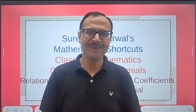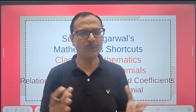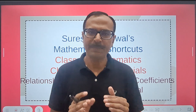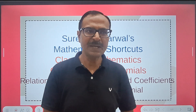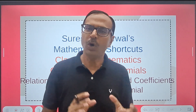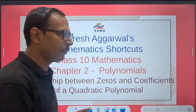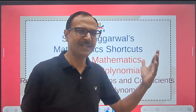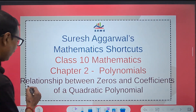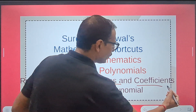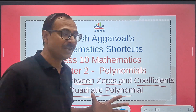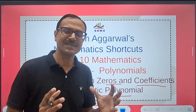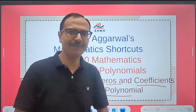Hello friends, welcome to Suresh Agarwal's Mathematics Shortcuts. You have been watching videos based on the polynomials chapter. This chapter of algebra finds applicability in class 10th, especially important for board exams, and in all quantitative aptitude exams. The topic of quadratic polynomials finds applicability, and there will not be any board exam — you can check the last 10 years' papers — in which the relationship between zeros and coefficients does not exist. It surely will exist as a one, two, or three mark question.